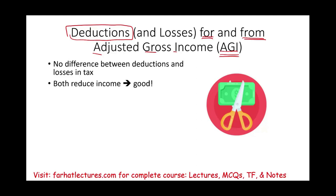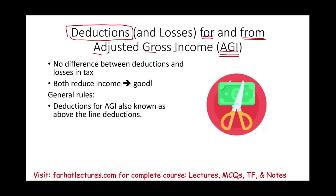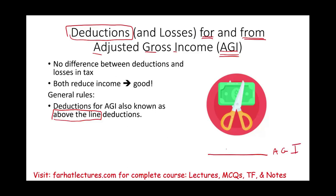Here are some general rules you want to be aware of. Deductions for AGI, also known as deductions above the line — what is that line? We're going to see what that line is. But if you've seen or heard about deductions for AGI, it means above the line. That line is adjusted gross income. Any deduction that is above that line is called 'for AGI,' and we need to know what those deductions are.